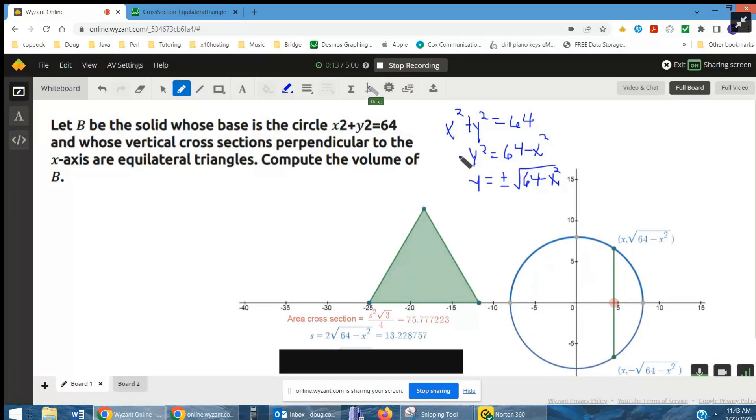And if we wanted to solve for y, it would look like this right here. And so the top half of that circle is y equals the positive square root of 64 minus x squared.